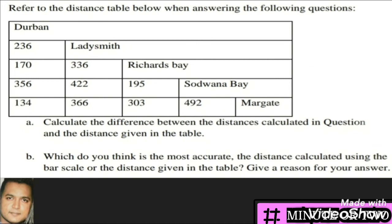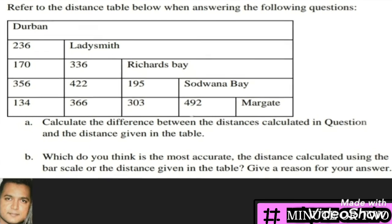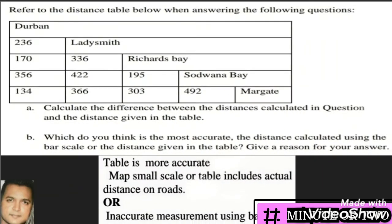The question then asks which distance is more accurate — the one calculated using the bar scale or the one from the distance table — and asks for a reason. The table is the more accurate reading as it gives the actual distance on the ground, whereas from the map we took a straight line, which does not reflect the true distance on the ground.